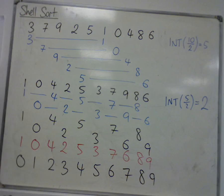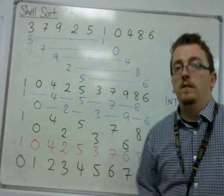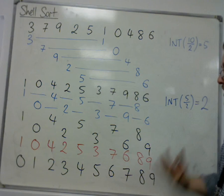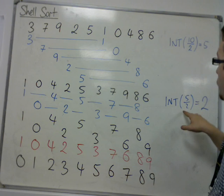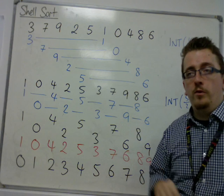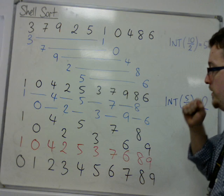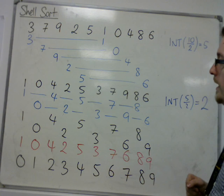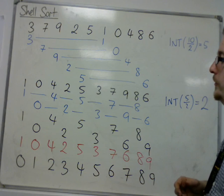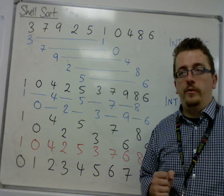So that is using shell sort with 10 numbers. The only real difference here was this bit - the integer part of 2.5. So the next video, I will look at a list of 7 numbers.